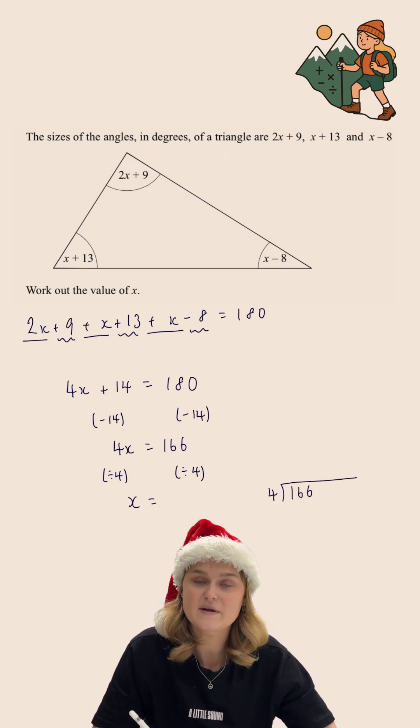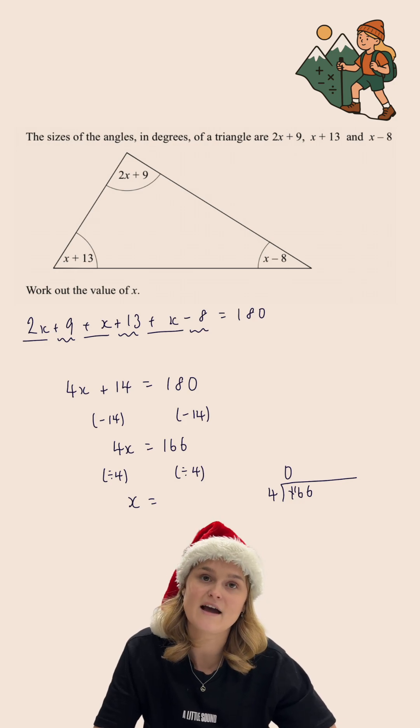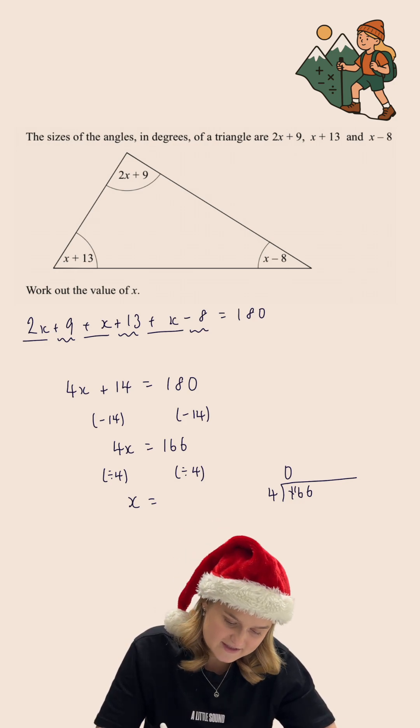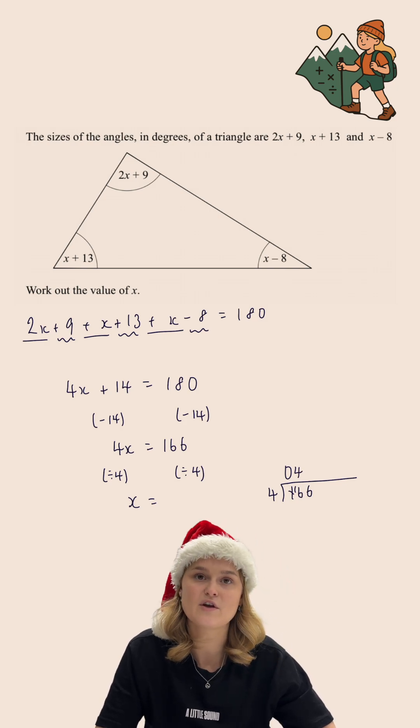First of all we're doing how many whole groups of 4 go into 1. Well I can't get any groups of 4 into 1. I'm then going to carry that 1 over and do 4s into 16. Well 4 goes into 16 4 times with no remainder.